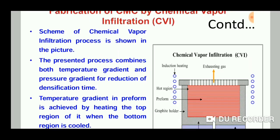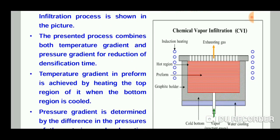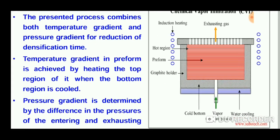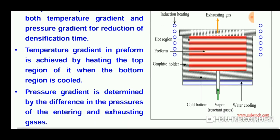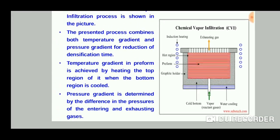This scheme of the chemical vapor infiltration process is shown. The presented process combines both the temperature gradient — that is, the hot region or furnace — and a pressure gradient, such that the bottom surface is supplied with pressurized gas or vapor for the reduction of the densification time. The temperature gradient in the preform is achieved by heating the top region while the bottom region is cooled. The pressure gradient, that is the pressure difference, is determined by the difference in the pressures of the entering and exhausting gases.